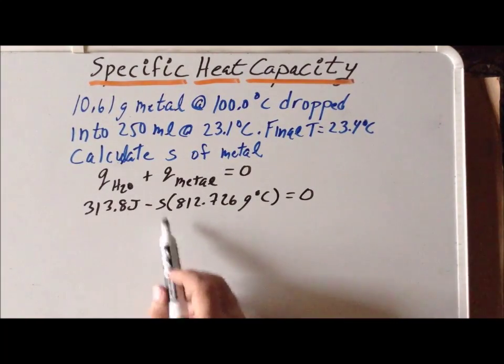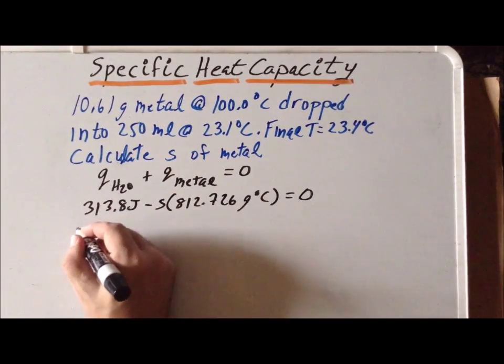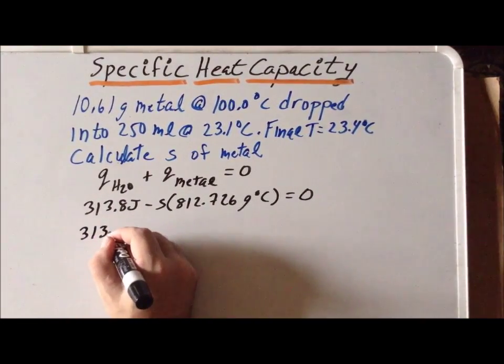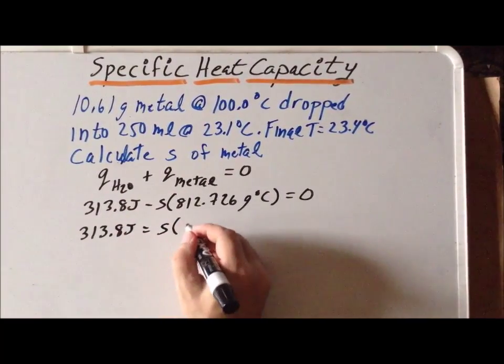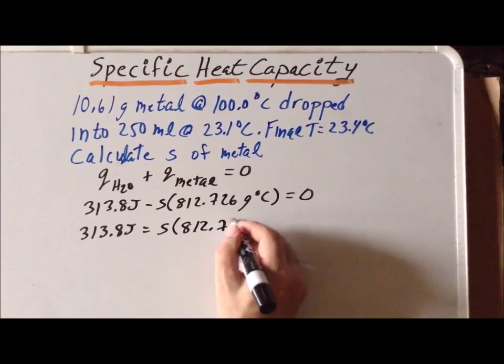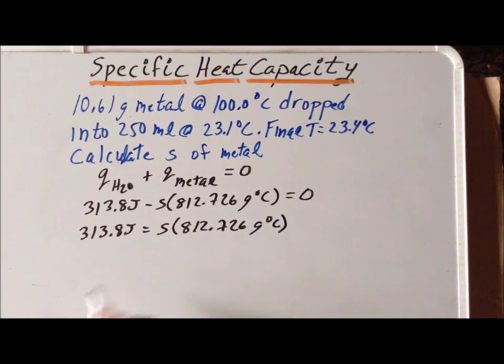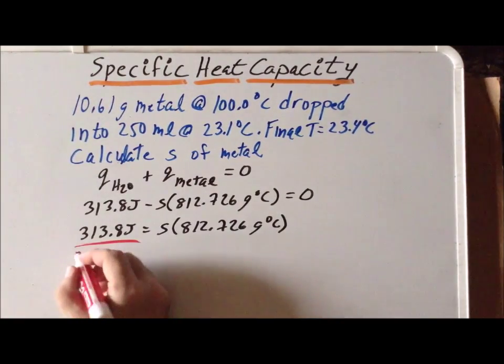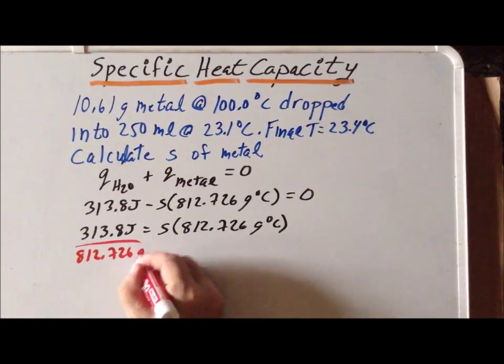Now we simply add S times 812 to each side to get 313.8 joules equals S times 812.726 grams degree centigrade. Now it's simply a matter of dividing each side by 812.726 grams degree centigrade.